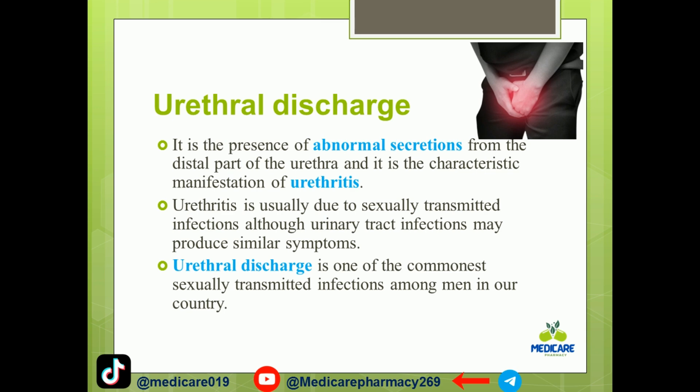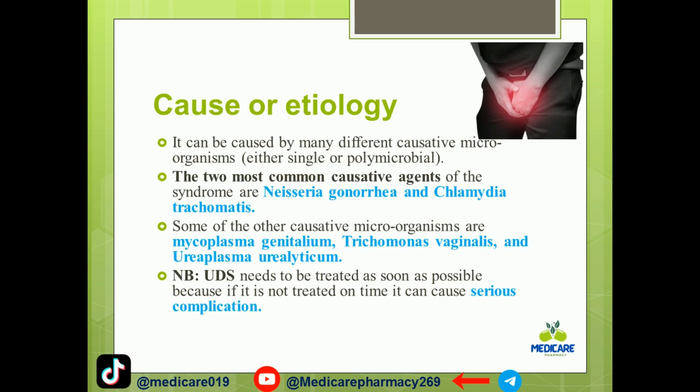Urethral discharge can be caused by many different causative microorganisms, either single or polymicrobial. The two most common causative agents of the syndrome are Neisseria gonorrhea and Chlamydia trachomatis.